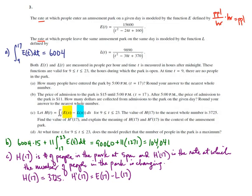And so h prime of 17 is then just e of 17 minus l of 17, and that's going to be the net rate at which the number of people in the park is changing.